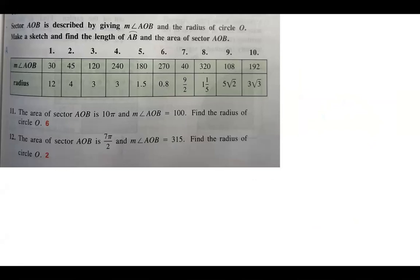It says sketch sector AOB is described by giving measure of angle AOB and the radius of circle O. O is the center of the circle. Make a sketch and find the length of arc AB and the area of sector AOB. So we got a circle. For number 5, the angle is 180 degrees, that's the diameter. A and B are on the circle and O is the center of the circle. It's got a radius of 1.5.